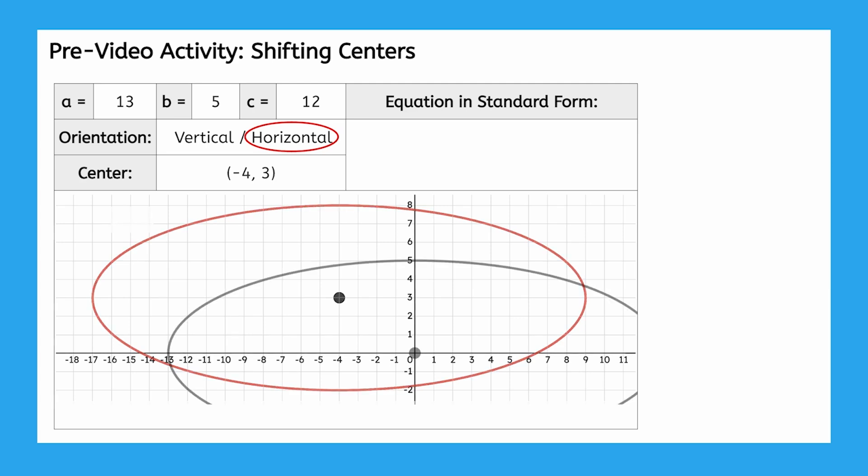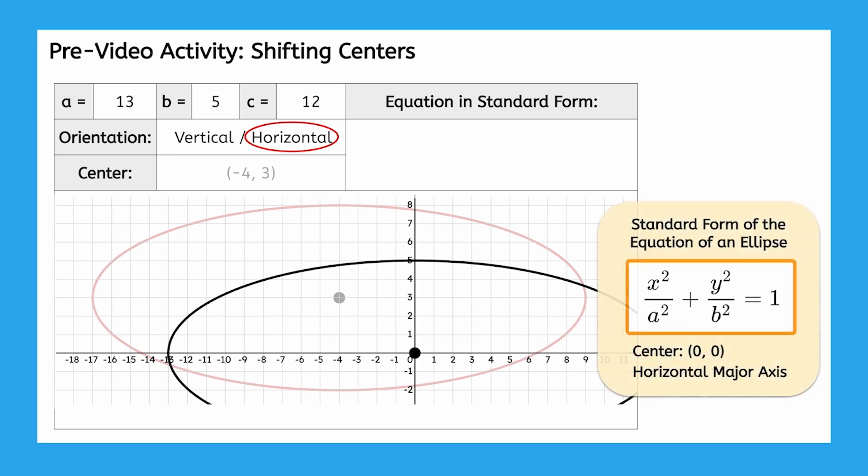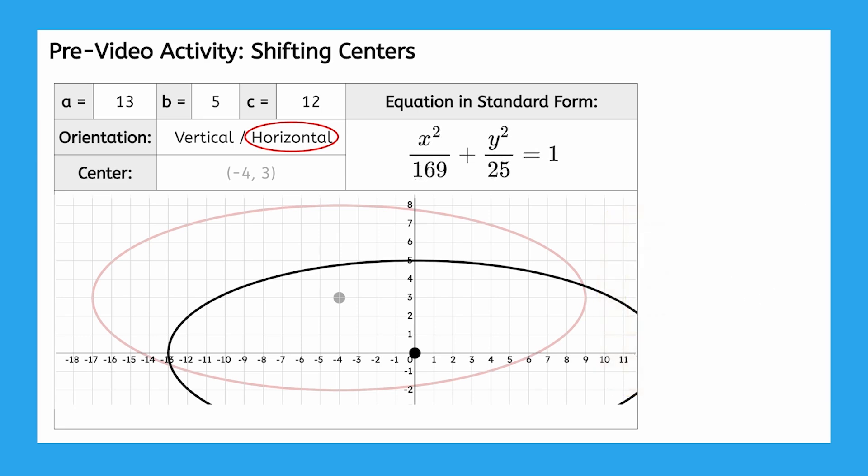Well, if the ellipse were centered at the origin, then from the previous lesson, we know we would just need to replace the values of a and b in the standard form for a horizontally oriented ellipse with 13 and 5. Doing that, we find it results in x squared over 169 plus y squared over 25 equals 1.